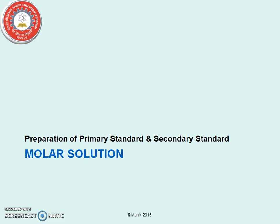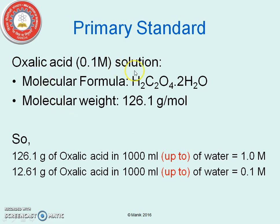Preparation of primary and secondary standards — molar solutions. In acid-base titration, oxalic acid is one of the important primary standards used for standardization of bases. The molecular formula of oxalic acid is as given, and the molecular weight is 126.1 g/mol. Dissolving 126.1 g in 1000 ml of water gives a 1 molar solution; the final volume must not exceed 1000 ml. Therefore, 12.6 g of oxalic acid dissolved to 1000 ml gives a 0.1 molar solution.